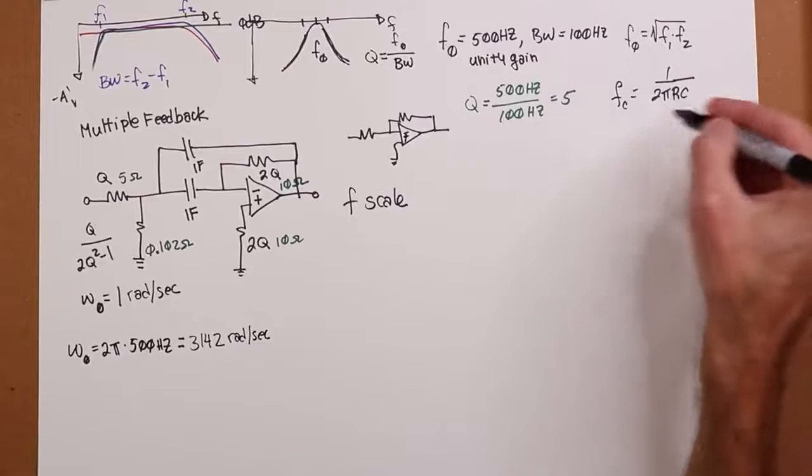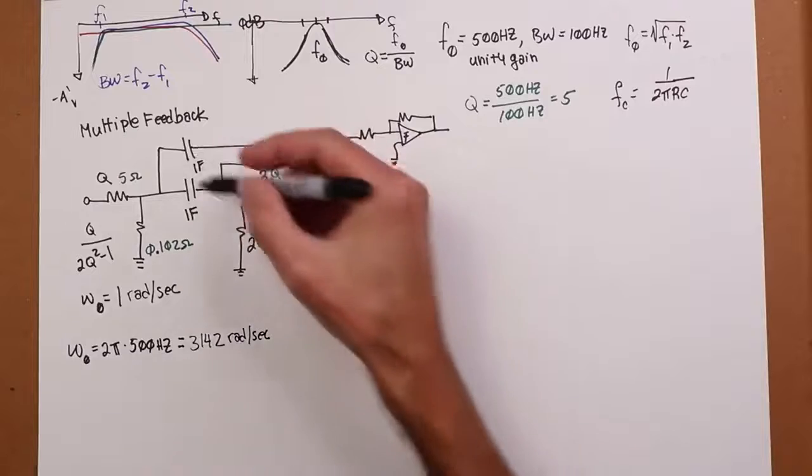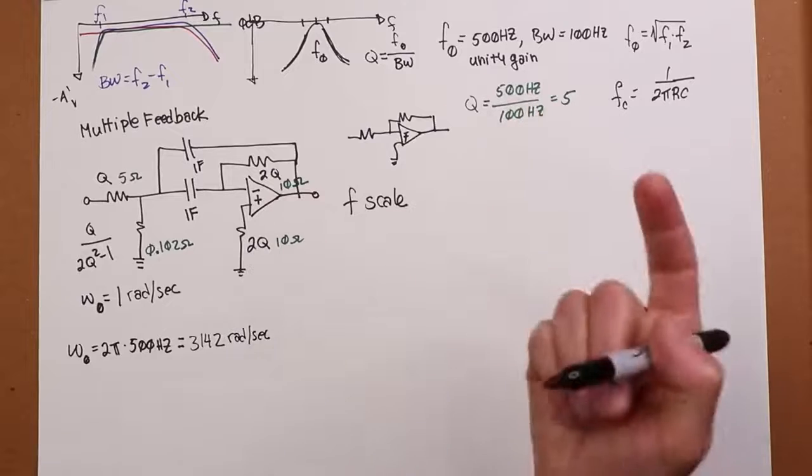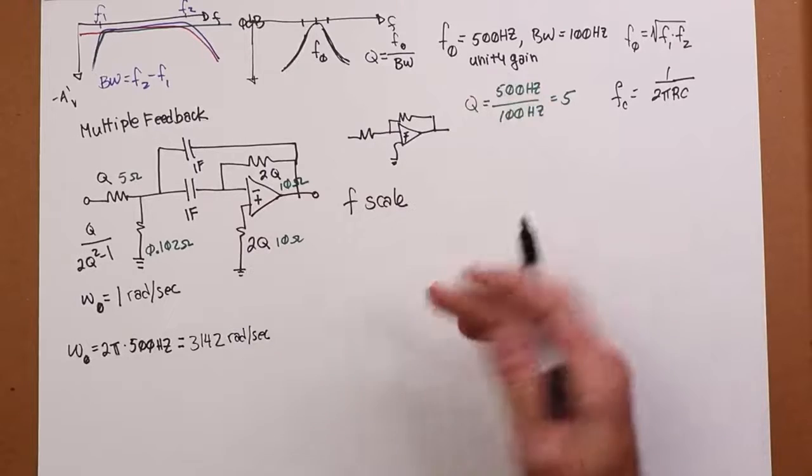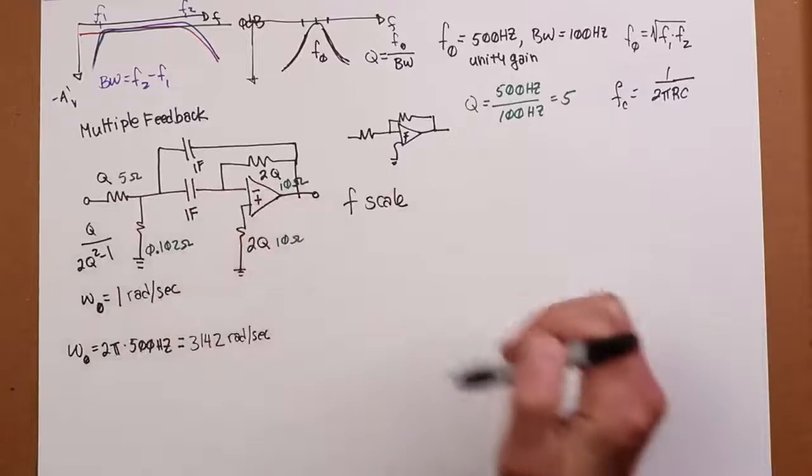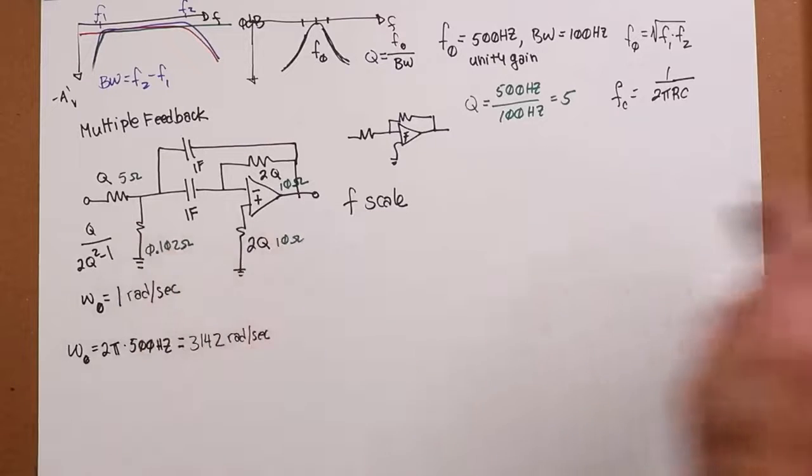So, our target value is 2 pi times 500 hertz or 1,000 pi. That's approximately 3142 radians per second. So, we choose either r or c. What do you want to do? Well, as I said in a preceding video, I like having a unity for the caps because I know I can get 10 nanofarad caps, 100 nanofarad caps, and so on and so forth. It's easy. And resistor values, it's a lot easier to get weird values for them than it is for the capacitors. So, once again, I'm going to go through and divide all my resistors by this sort of crazy value, 3142, and see what I wind up with.